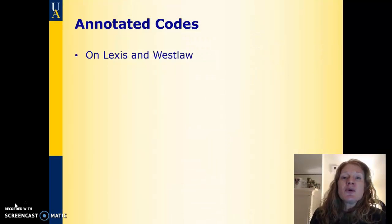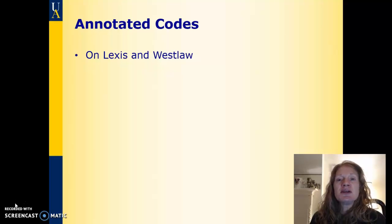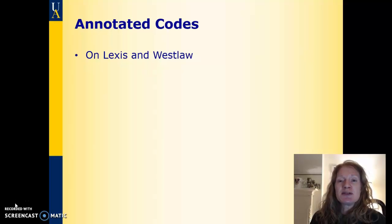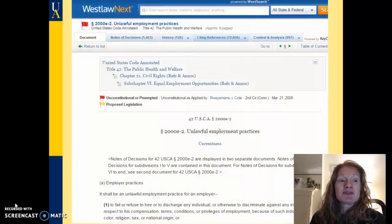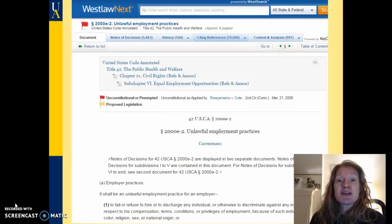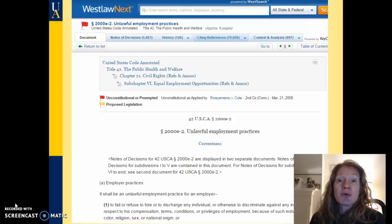On Lexis and Westlaw, the codes you're going to find are annotated codes. You can also find these codes on the internet for free, but they are unannotated, meaning it just has the text of the statute as the legislature wrote it. What the annotated codes have in addition is summaries of cases that interpret that particular statute, which can be a very handy thing when you're researching a statute — like you're going to do for your second memo in legal writing class.